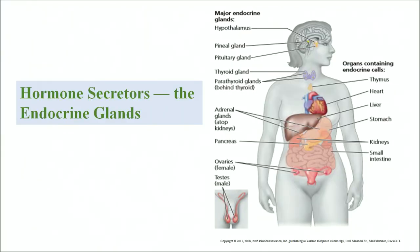Now let us look at the various endocrine glands and the hormones they secrete. The endocrine glands in the body include the hypothalamus, pineal gland, pituitary gland, thyroid gland, adrenal cortex, pancreas, ovary, and testes. These glands are also connected to organs like the thymus, heart, liver, stomach, kidney, and small intestine. We will go through each gland, its hormones, and their functions.